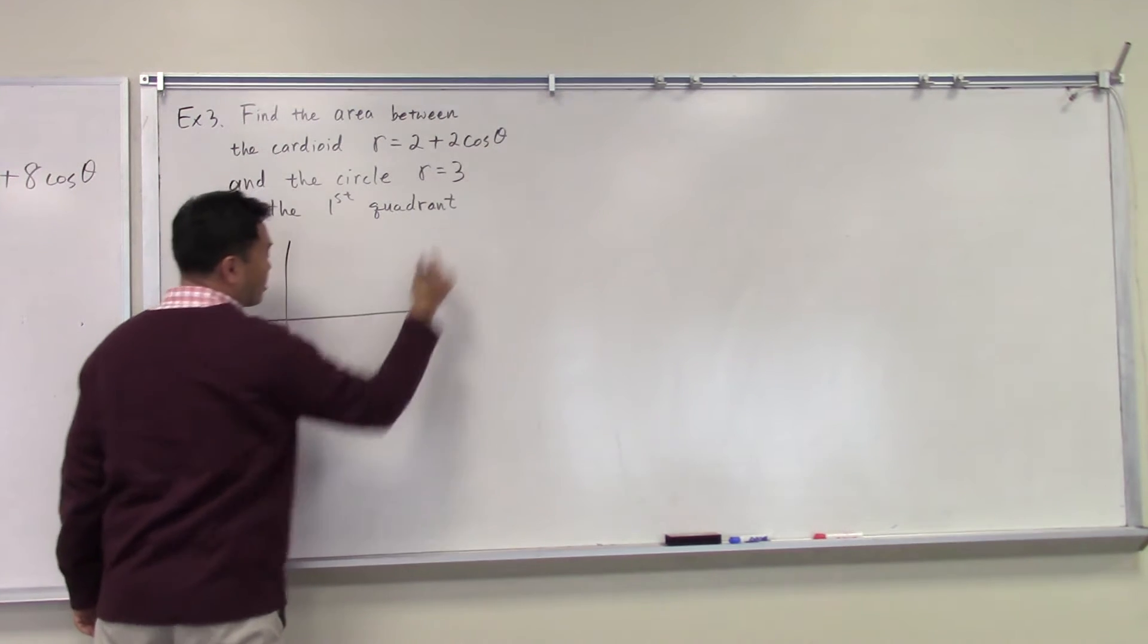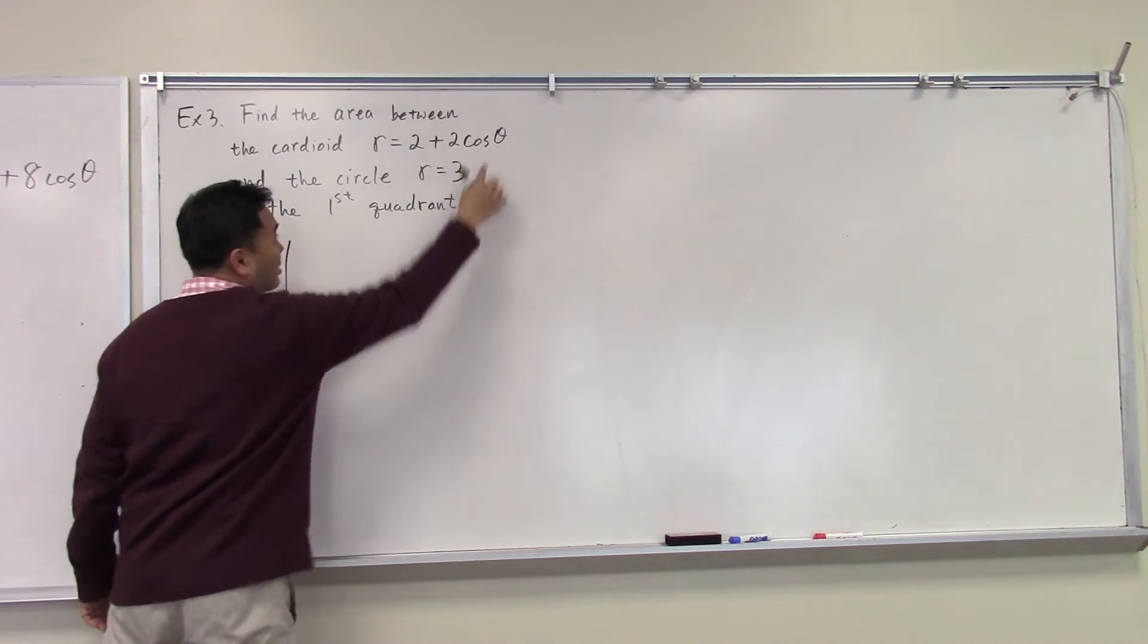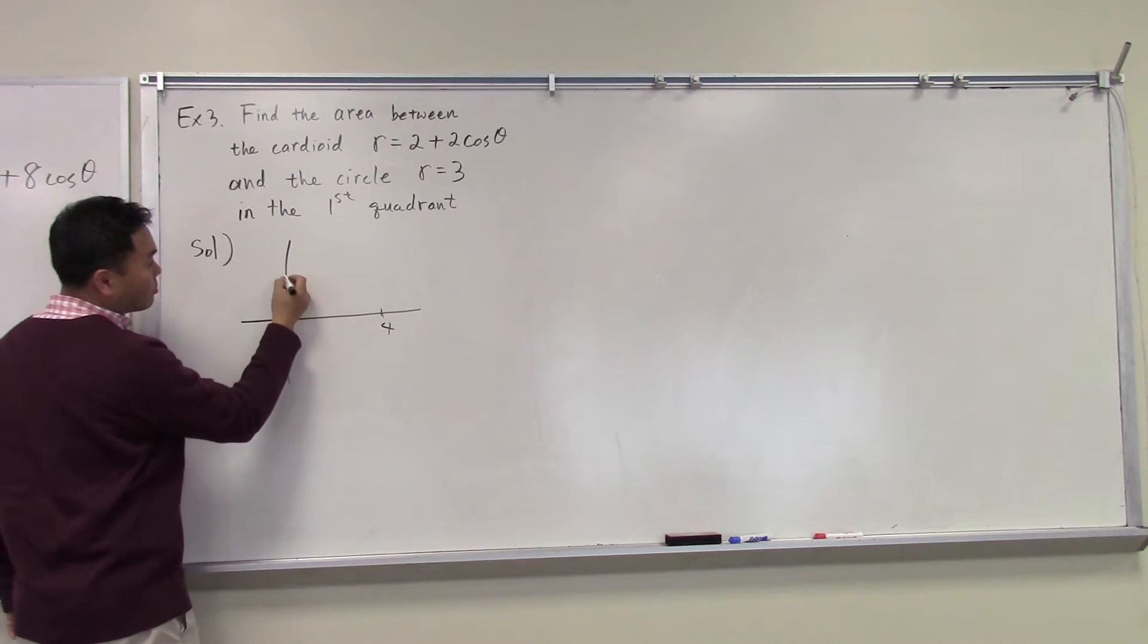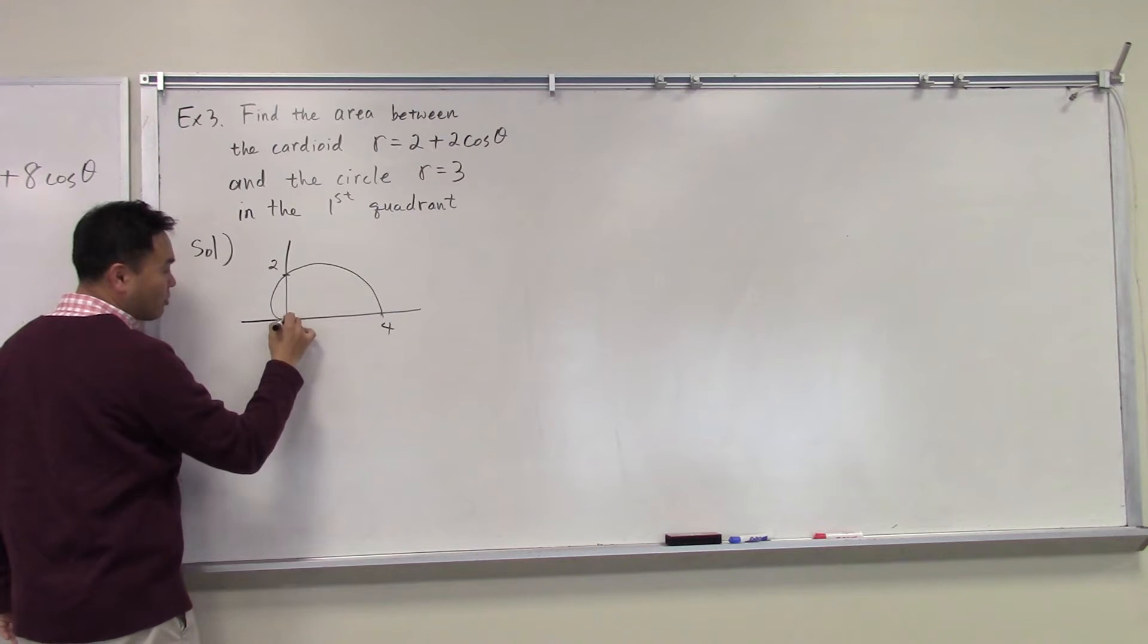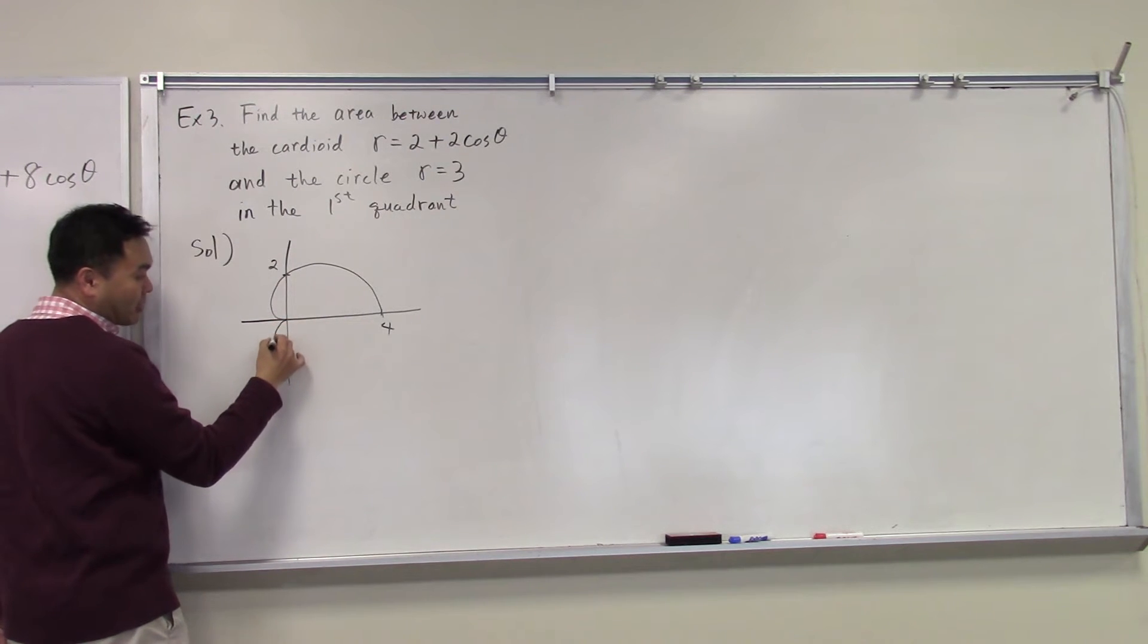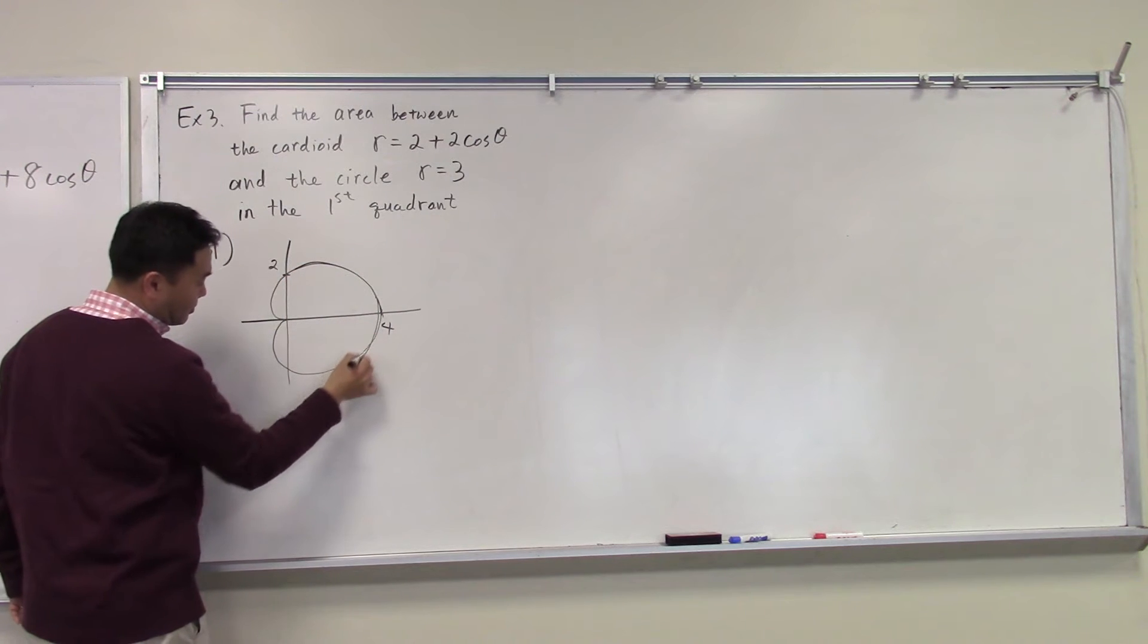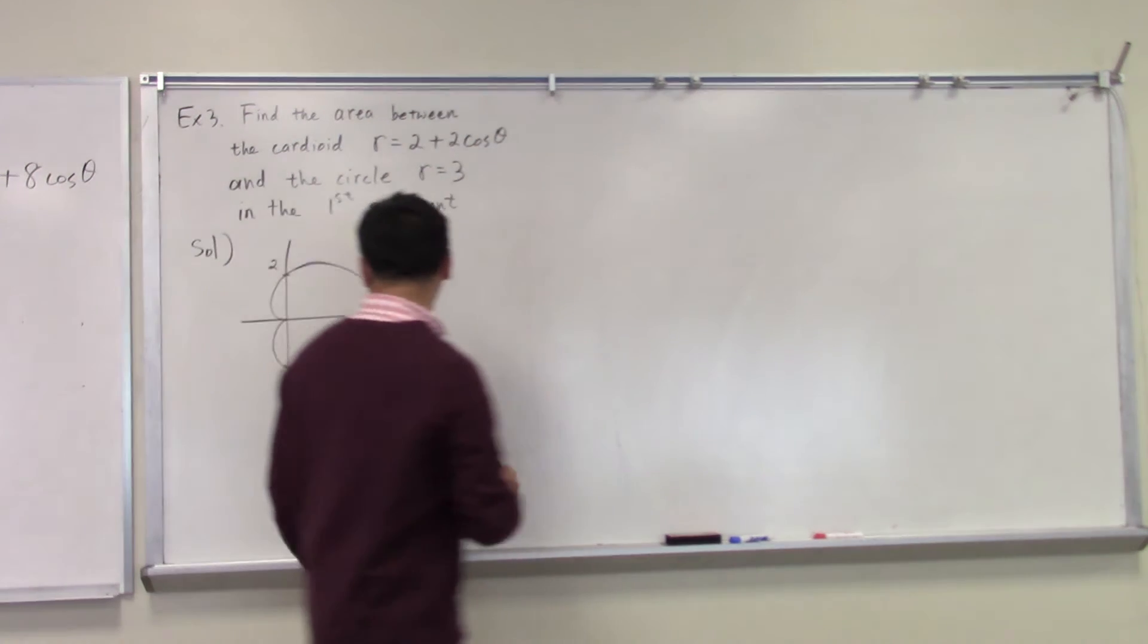The cardioid, if you plug in zero, you get four. If you plug in 90 degrees, cosine 90 degrees is zero, so on the 90-degree line you get two. And then we know that the cardioid goes like that, hits the origin at 180 degrees, comes back out, and has this symmetric form. So that's the shape of the cardioid.